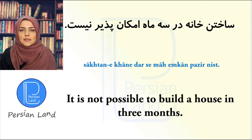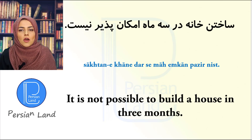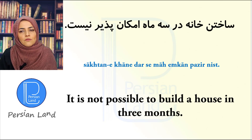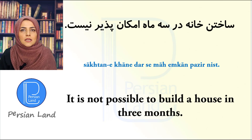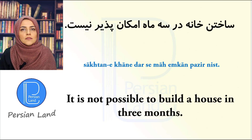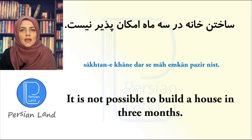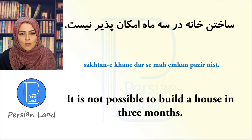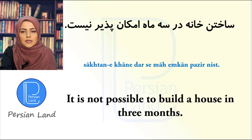ساختن خانه در فضا امکانپذیر نیست. We can also say توی فضا امکانپذیر نیست که خونه رو بسازی, or توی فضا ممکن نیست که خونه رو بسازی. So we change the infinitive to the verb بسازی — this is the subjunctive form. امکانپذیر بودن means 'to be possible'. ساختن خانه means 'to build a house'.